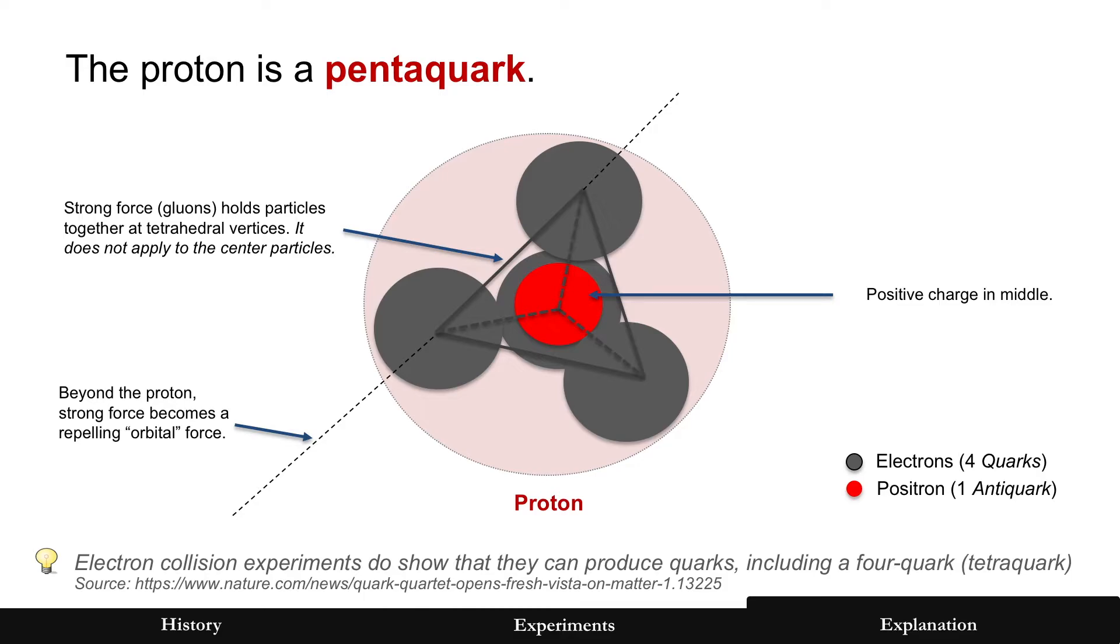Because the proton is a pentaquark. That's what they found in high energy experiments. And in this model, a pentaquark would be made of four electrons and one positron. All the particles that you see in experiments, other than these collision experiments where you think you see a quark. A quark is really just a high energy electron or a high energy positron if it's an antiquark.